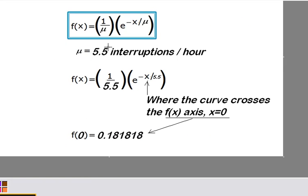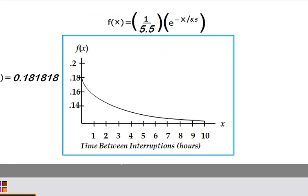Now, we're going to use our function, and we're going to talk about the function f(X) being one over mu, but of course mu was given as 5.5, so we can just plug those values in, and we'll get one over 5.5 times E raised to the negative X, and we do not yet know what X is, divided by 5.5.